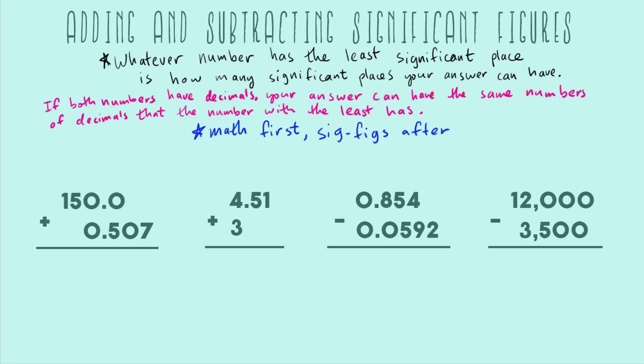Let's go to our first example. We're going to follow our rule of just doing math first. So first, I just add and I get 150.507. Great. So math is done. Now let's apply these sig fig rules.